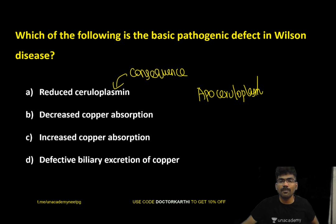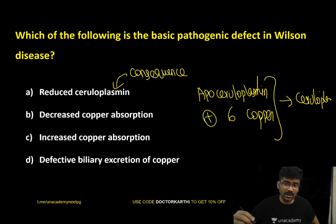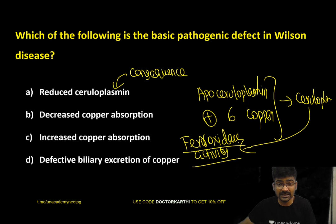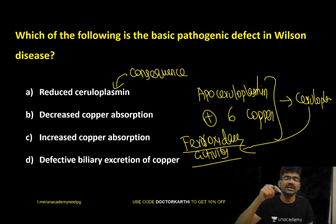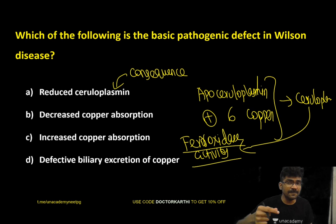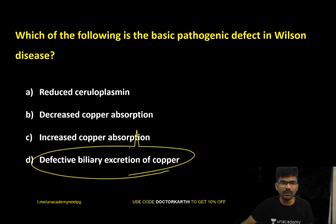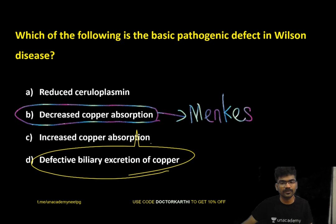Ceruloplasmin is formed by adding 6 copper atoms to apo-ceruloplasmin. It is a plasma protein with ferroxidase activity — it oxidizes ferrous iron to ferric iron. In Wilson's disease, the incorporation of copper into apo-ceruloplasmin is impaired, causing reduced ceruloplasmin levels. This is a consequence, not the primary defect. The main defect is defective biliary excretion of copper. Decreased copper absorption, by contrast, is the defect seen in Menkes disease.